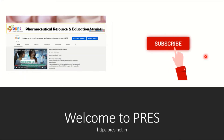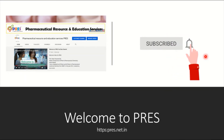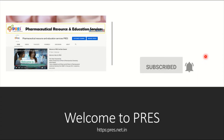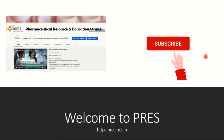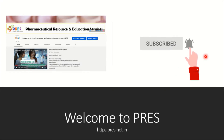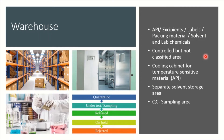Let's start and understand what flow the industry follows to manufacture sterile injectable formulations. The first step is the warehouse, which is the area utilized to store all kinds of APIs, excipients, labels, and packaging materials.